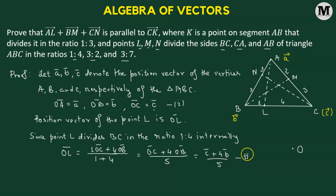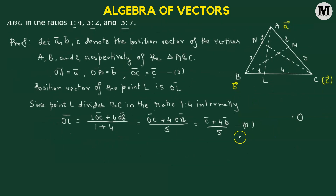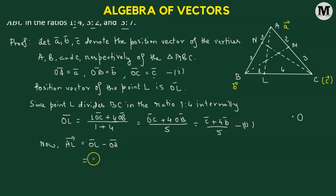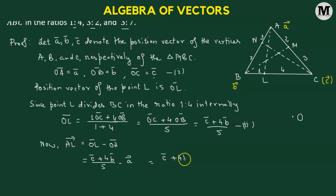Now that we have OL vector and OA vector, we can find vector AL. The AL vector is defined as OL minus OA. That's C vector plus 4B vector divided by 5 minus vector A, which simplifies to C vector plus 4B vector minus 5A vector, all divided by 5. We'll label this as number 3.